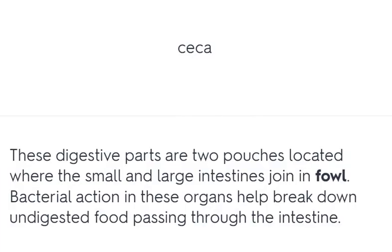Ceca – these digestive parts are two pouches located where the small and large intestines join in fowl. Bacterial action in these organs helps break down undigested food passing through the intestine.